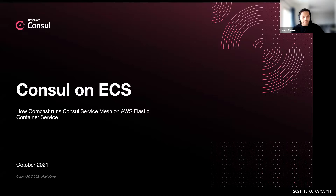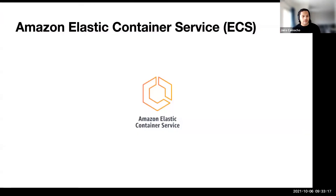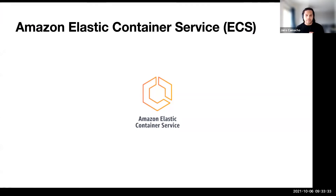To get us started, I'll provide a quick overview of Amazon Web Services Elastic Container Service. Amazon ECS is a container orchestrator. It allows users to take containers like Docker images and run them in the cloud. It's very similar in terms of functionality to Kubernetes or Nomad, but what really differentiates ECS is its emphasis on simplicity. While that means it doesn't have the robust feature catalog of Kubernetes, it does make it a lot easier to get started and run things.